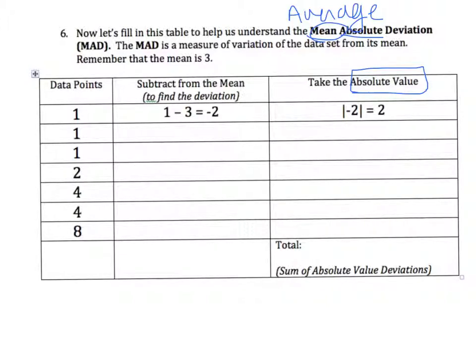I already did the first one, the data point of one. One minus three is a negative two. Then you take that negative two and take the absolute value, which is a positive two. I would do the same thing in each column and complete my chart. So why don't you go ahead and complete your chart. I'm going to push pause and be back in just a second.